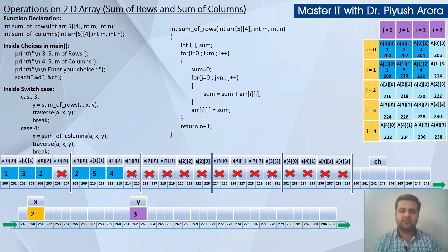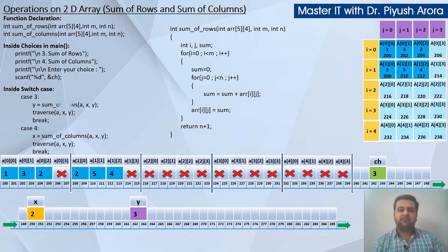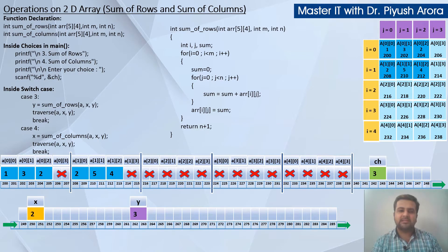Our main program will start and all choices will be highlighted — choice number 3 for sum of rows and choice number 4 for sum of columns. The user will input a choice into the 'ch' variable. Suppose the user inputs choice 3, then case 3 will execute: Y equals sum of rows of A, X, Y — where A is the two-dimensional matrix passed by reference, X is the size of rows (X=2) and Y is the size of columns (Y=3).